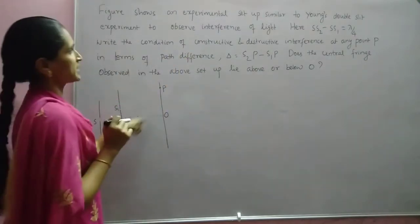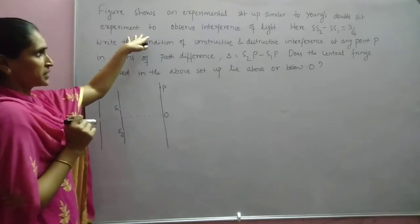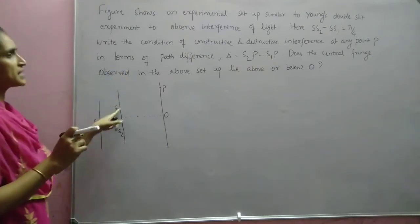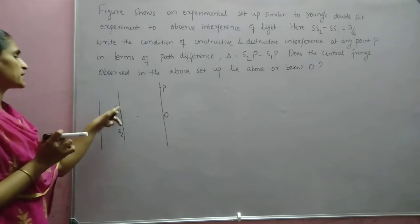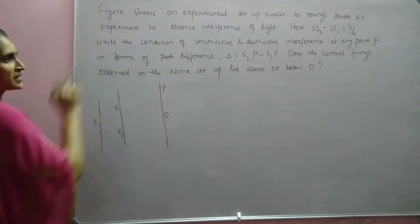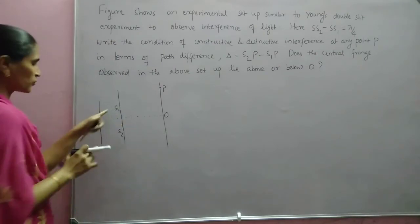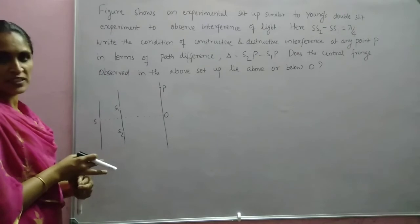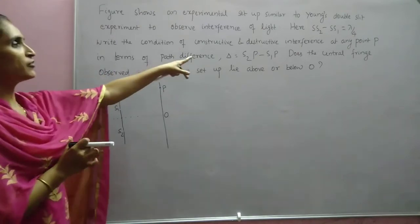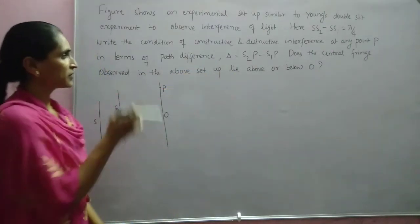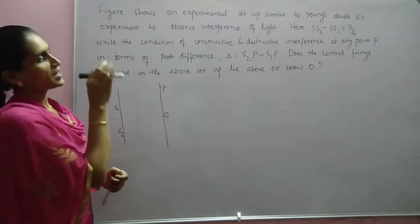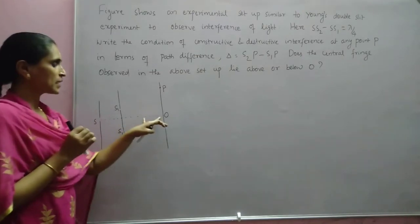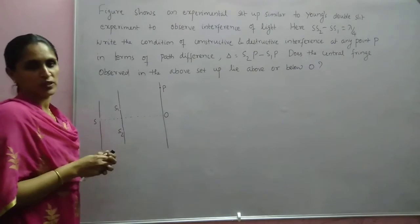The next figure shows an experimental setup similar to Young's double slit experiment to observe interference. Here it is given that SS2 minus SS1 equals lambda/4, which means S1 and S2 are not equidistant — there is already a path difference of lambda/4 in the waves reaching S1 and S2. We need to write the condition for constructive and destructive interference at any point P in terms of path difference delta = S2P minus S1P, and also determine whether the central fringe lies above or below O.